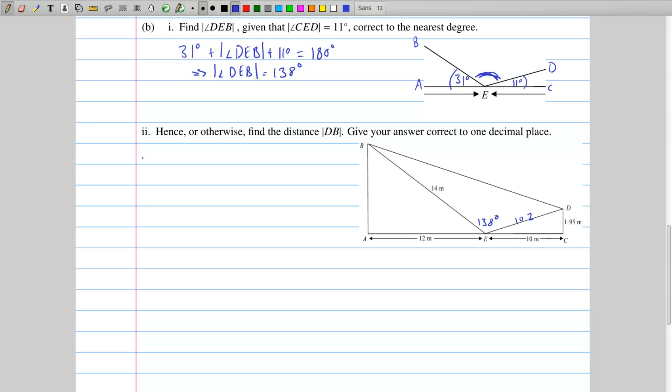To find it we need to use the cosine rule, which says that BD, if you square it, is the same as if you have BE and square it, and ED and square that, subtract 2 times BE times ED, the same two sides we just had, times the cosine of the angle in between them, which is DEB.